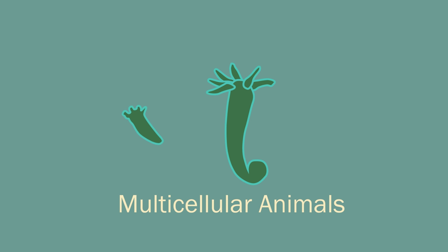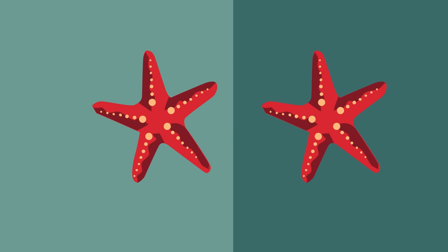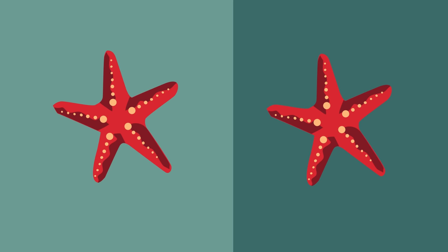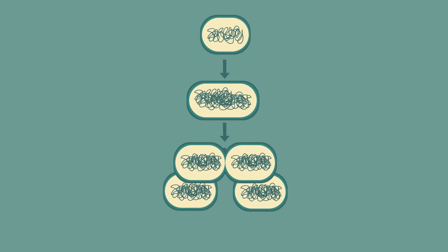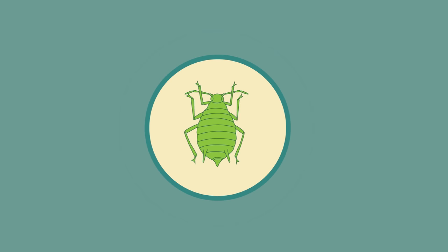Starfish can either split in half, in which case each half develops new arms to form a full starfish, or if a starfish loses an arm it will regrow that arm, and the lost arm will over time develop further arms itself, turning into a complete starfish. Bacteria have the simplest process of all — they just divide, as seen in mitosis, to form two identical individuals.